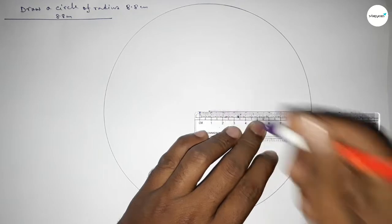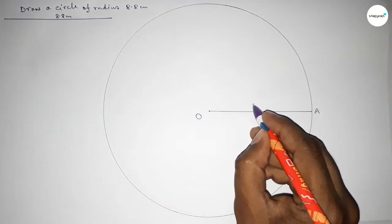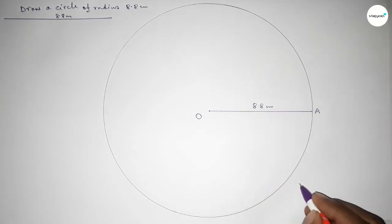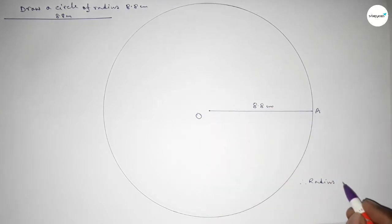So taking here point A. So O equal to 8.8 centimeter. So therefore, radius OA equal to 8.8 centimeter.